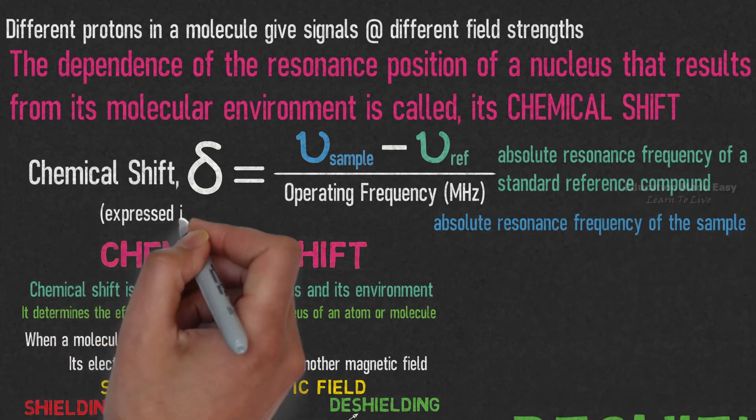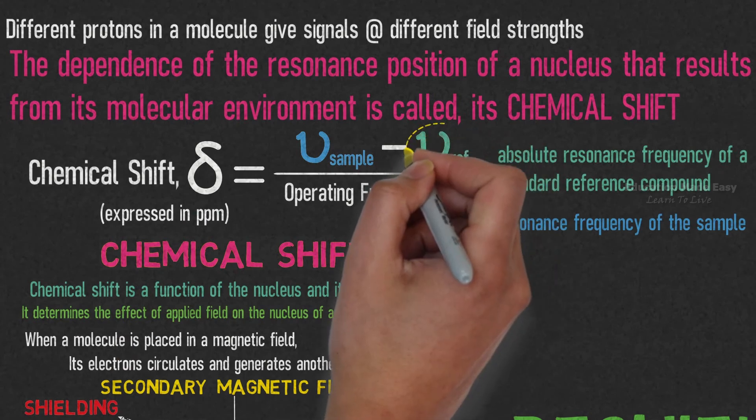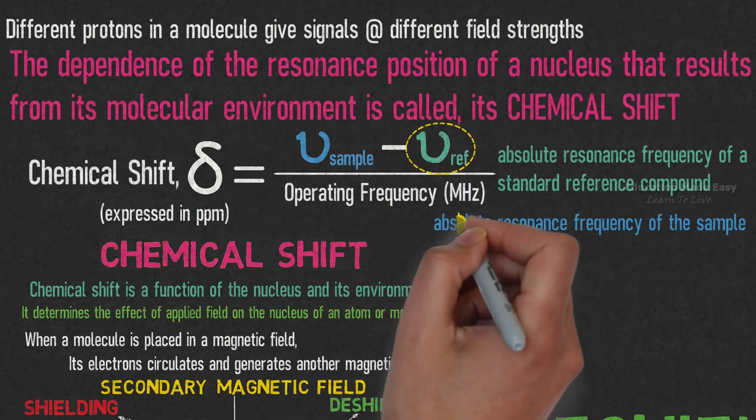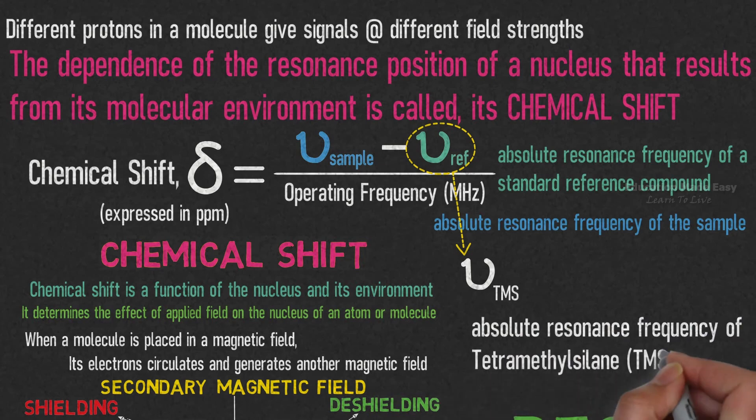Chemical shift, small delta, is expressed in parts per million or ppm. The reference in the chemical shift equation is sometimes written as mu TMS, which is the absolute resonance frequency of tetramethylsilane.